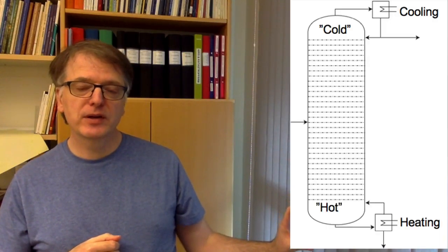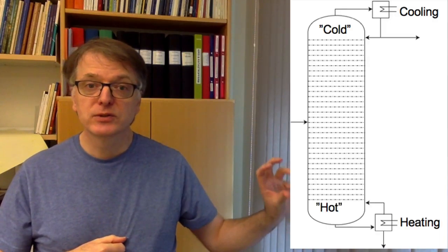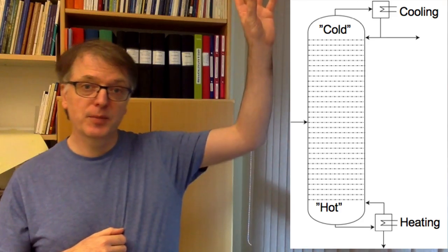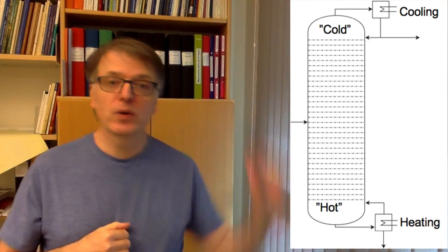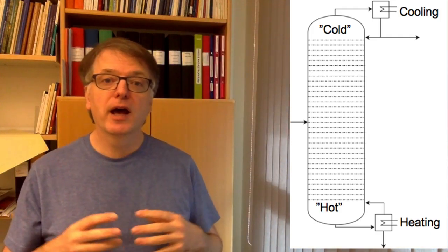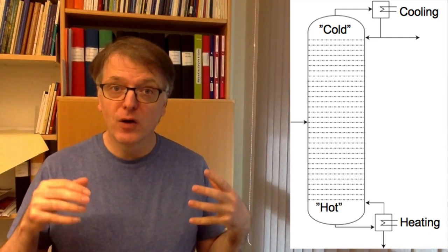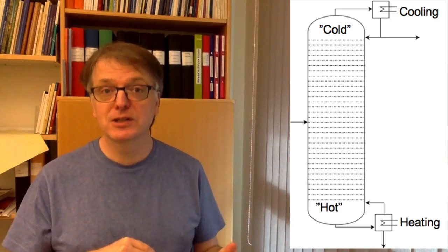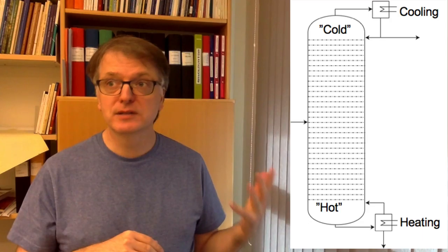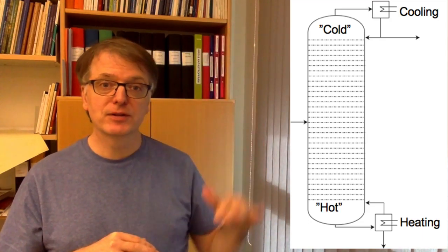A continuous distillation column looks like this. Down here, there is a reboiler. We heat down here and up there, there is a condenser. So it's hot below and cold above, and it's boiling all over. In all places it boils, but the composition of the liquid that boils is different on different levels.